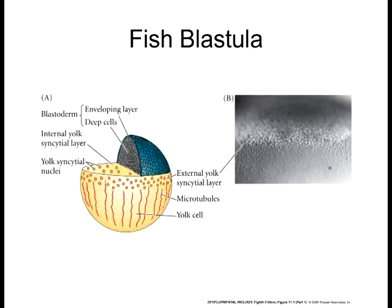Here you can see the yolk syncytial nuclei, the enveloping layer, and the overall blastoderm. Only the deep cells — the inner cell mass — become the embryo. The enveloping layer forms a shield around the yolk and plays a role in development, but doesn't actually become the embryo itself. This is similar to the trophoblasts in mammalian development.